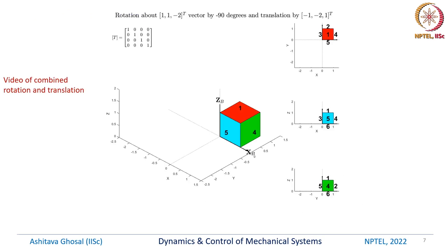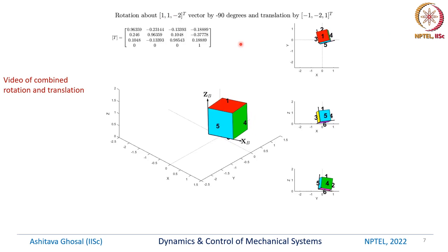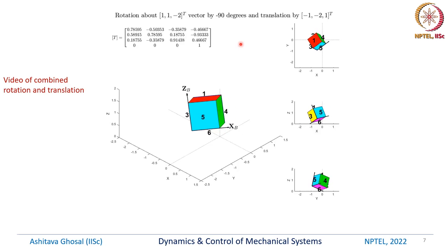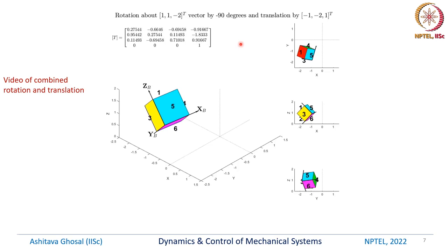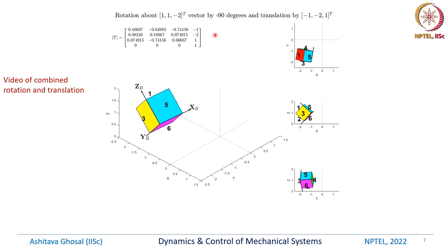This is a video of the combined rotation and translation of the dice — a rotation about the vector 1, 1, minus 2 by 90 degrees (as a unit vector) and a translation by 1, minus 1, minus 2, 1. Initially the dice is at 0, 0, 0, and it undergoes one rotation and one translation, ending up at the desired final location.